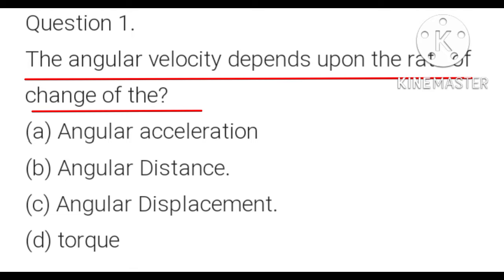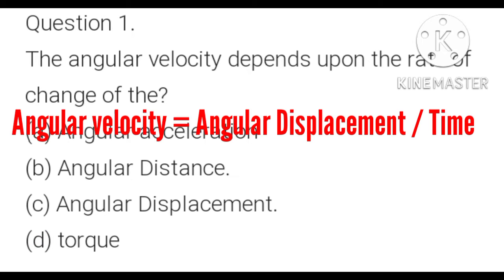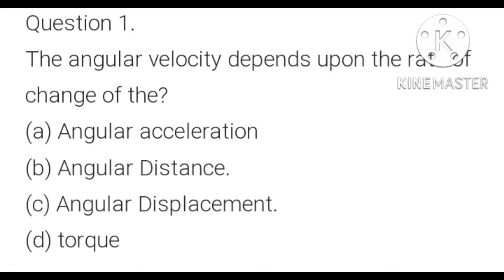Question 1: The angular velocity depends upon the rate of change of: A) angular acceleration, B) angular distance, C) angular displacement, D) torque. We know that angular velocity is equal to the ratio of angular displacement and time. So angular velocity depends upon the rate of change of angular displacement. Here C is the correct option: angular displacement.